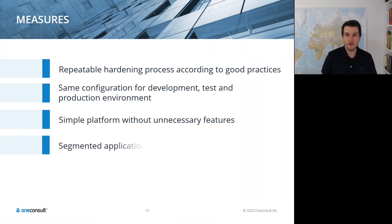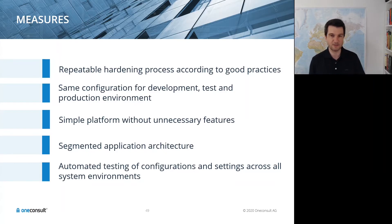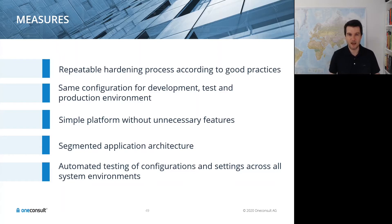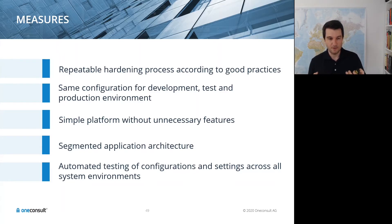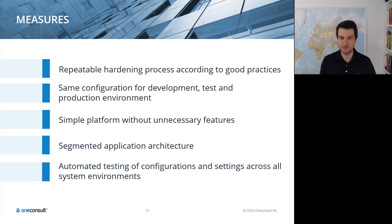Generally, unnecessary functionality should be disabled. Implement a repeatable hardening process according to good practices for each component and layer of your solution. Ideally use the same secure configuration for development, test, and production environments. Segment your application architecture as much as possible and automate testing of configurations and settings across all environments.